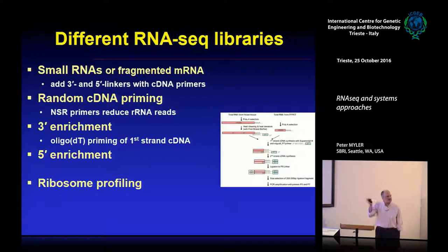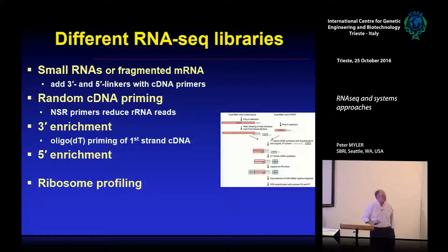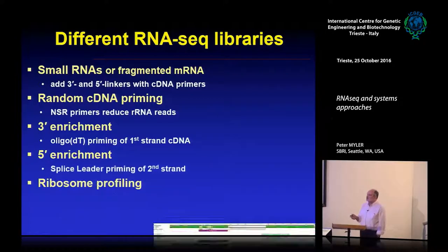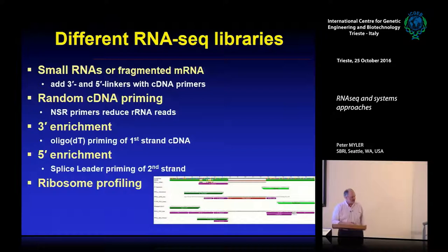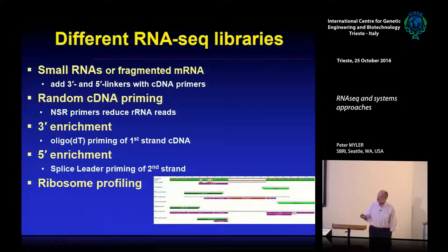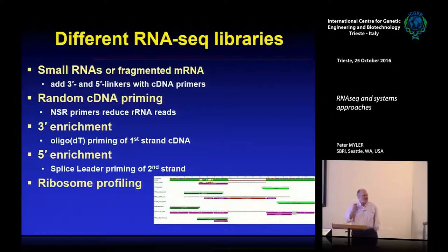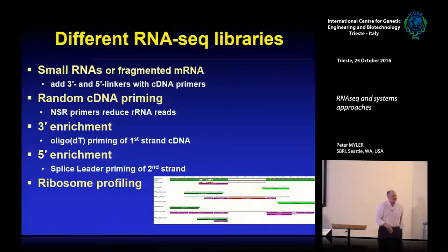You can enrich for the 3' end using oligo-dT priming to map the 3' end and sample transcript abundance, though you lose information about the 5' end. For 5' enrichment, in trypanosomatids including Leishmania we have the big advantage that all messenger RNAs have the same sequence at their 5' end — the splice leader — which is found in no other organism. Splice leader RNA-seq lets you specifically amplify parasite RNA even in the presence of a lot of host RNA.